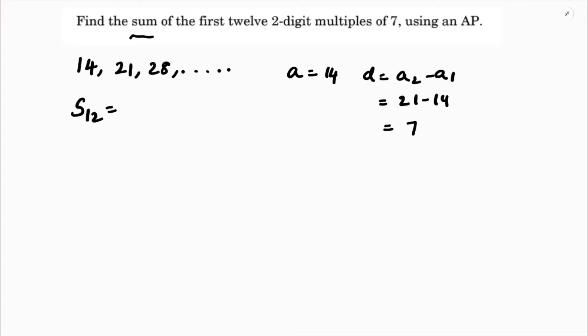Now for S12, the SN formula is: the sum of N terms is N by 2 into 2A plus N minus 1 into D.